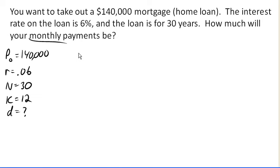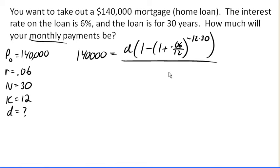So using my loan equation, we got 140,000 equals d times 1 minus 1 plus r over k to the negative k times n, all over r over k.